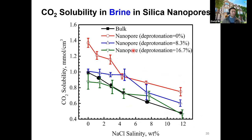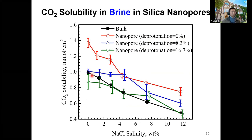Looking at overall CO2 solubility: as deprotonation degree increases or pH increases, CO2 dissolution in brine in silica nanopores decreases. When the deprotonation degree is 0% (low pH), CO2 solubility in brine is higher than in bulk — indicating over-solubility. Once CO2 dissolves into brine, it lowers the pH to around 5, though the reservoir conditions at high pressure and high temperature require further study.